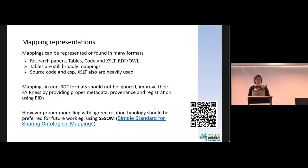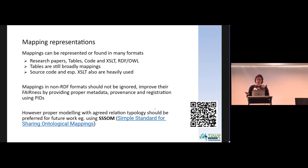These mappings can be represented or found in many different formats. They can be research papers, tables, code, XSLT, or RDF. Tables are still broadly used as mappings, and that's fine — you can document those as well. Source code or XSLT are also heavily used. Mappings in non-RDF formats should not be ignored, but their FAIRness can be improved by providing proper metadata, provenance, and registration using persistent identifiers. However, in the future it would be recommended to start using some typology or vocabulary for describing these mappings and crosswalks.